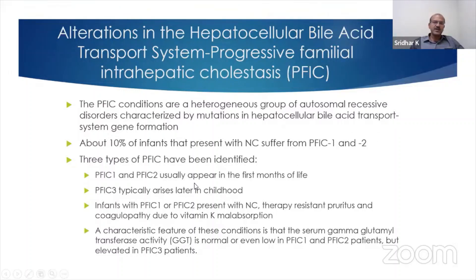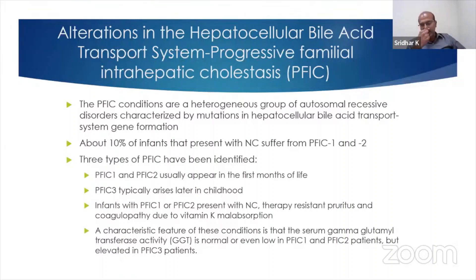There are three main types. PFIC 1 and 2 appear in the first months of life, and PFIC 3 appears later on. There is also a key difference: PFIC 1 and 2 typically have a low gamma-GT compared to other causes of cholestasis. This is a key differentiating factor.